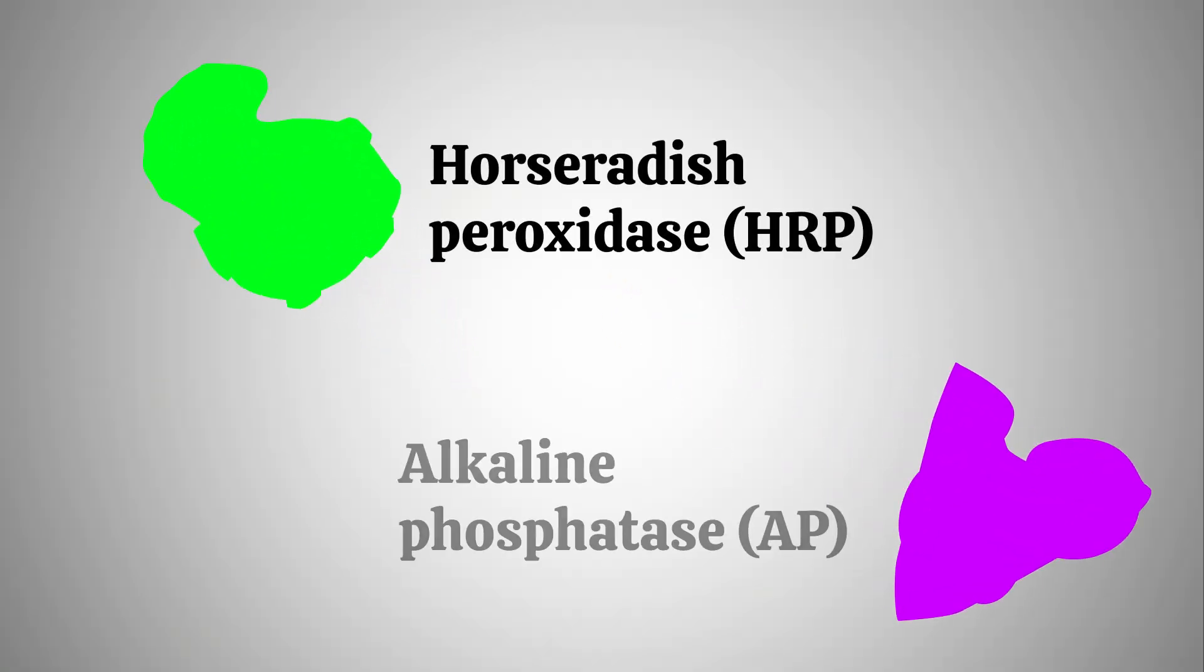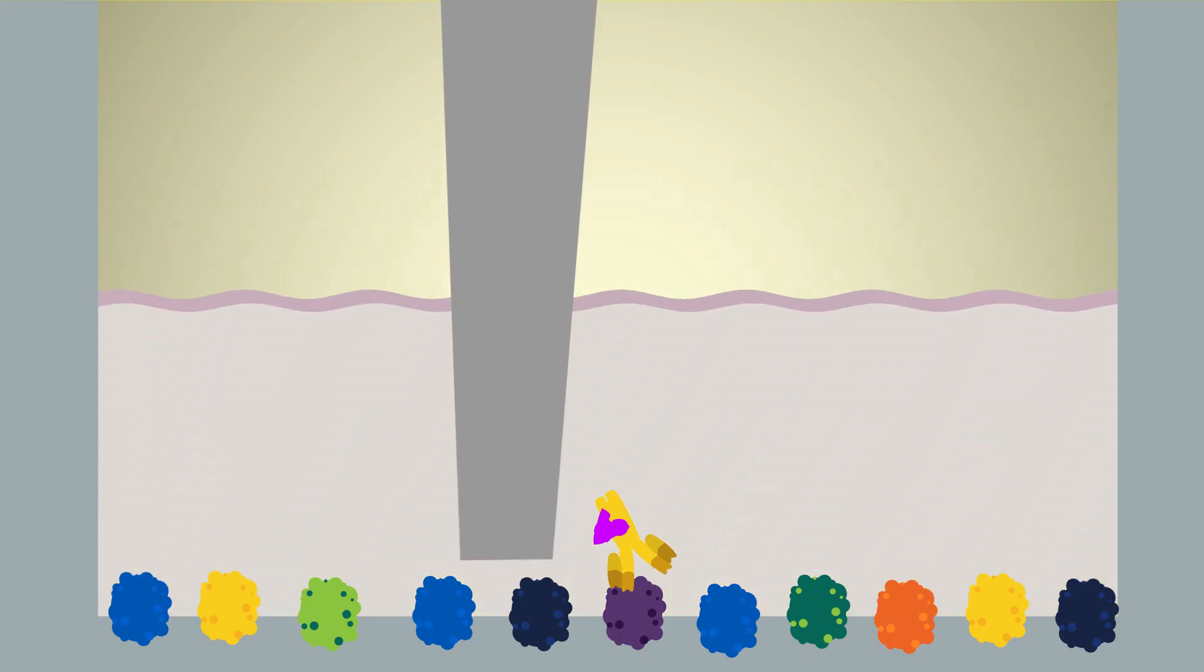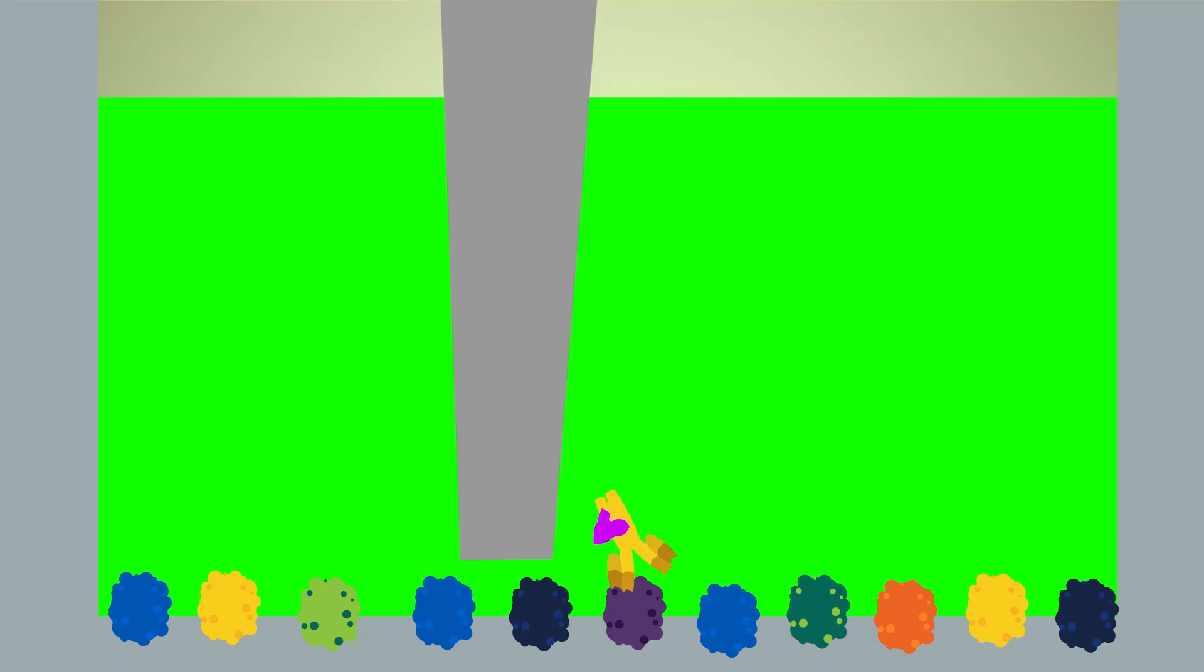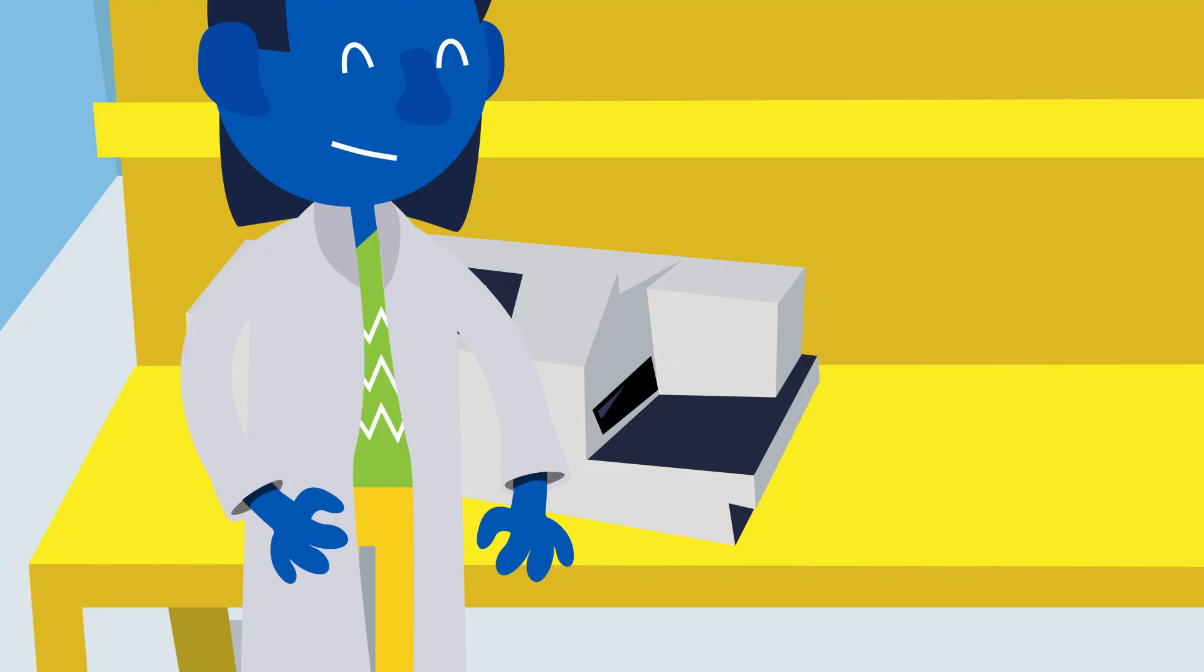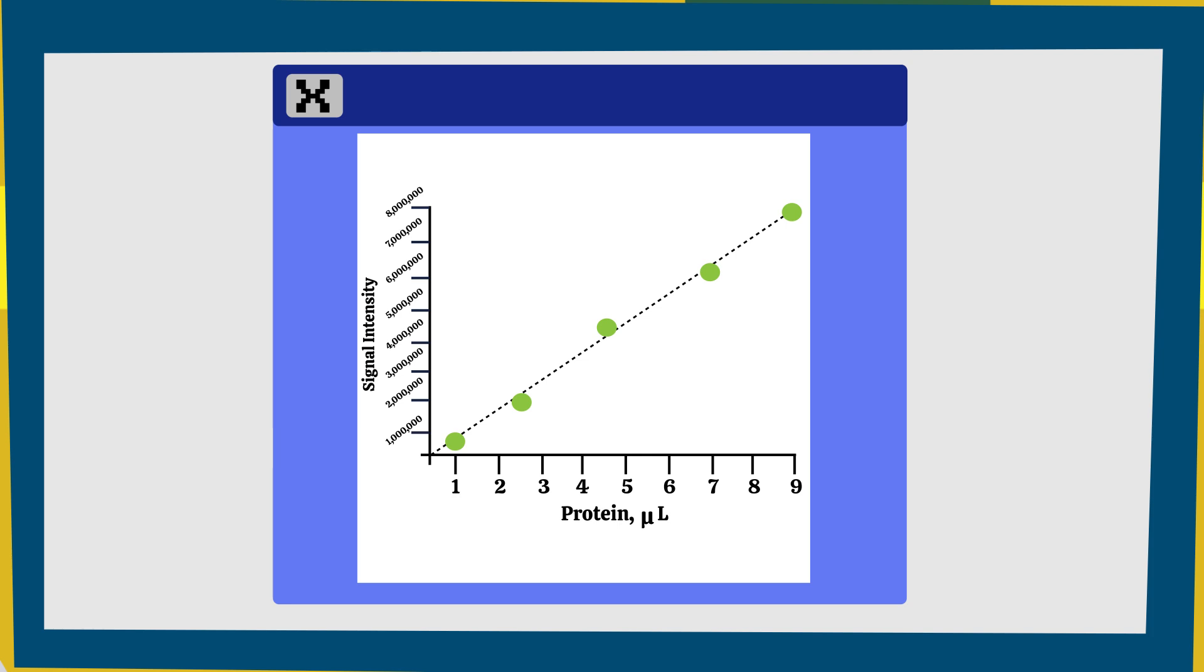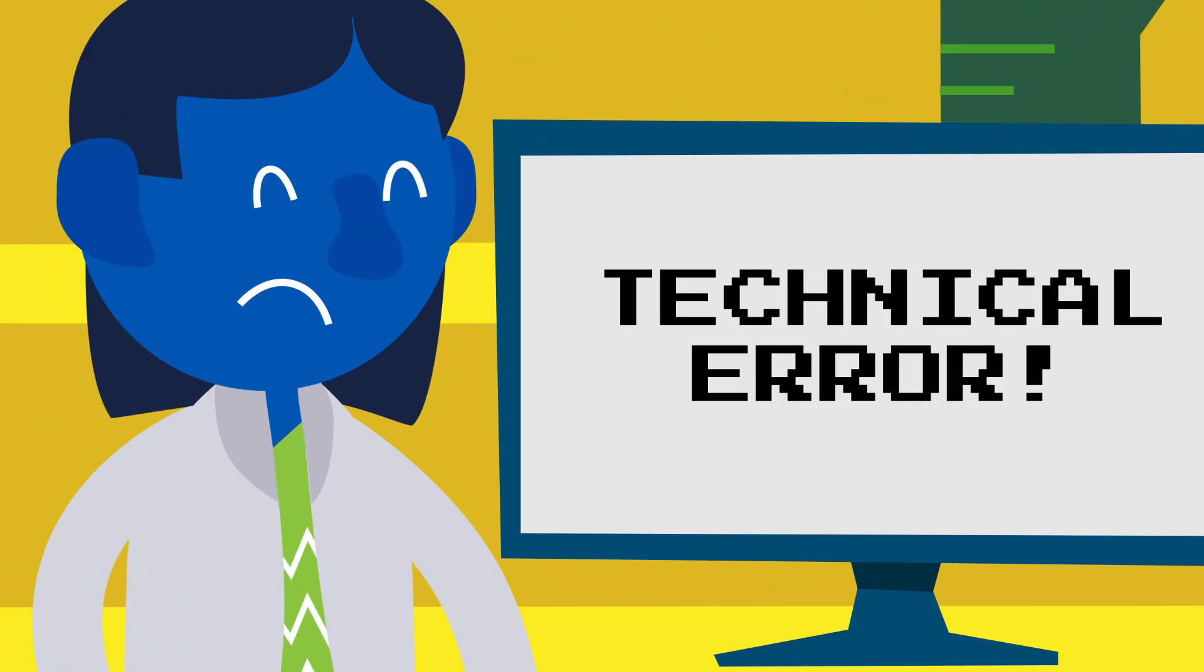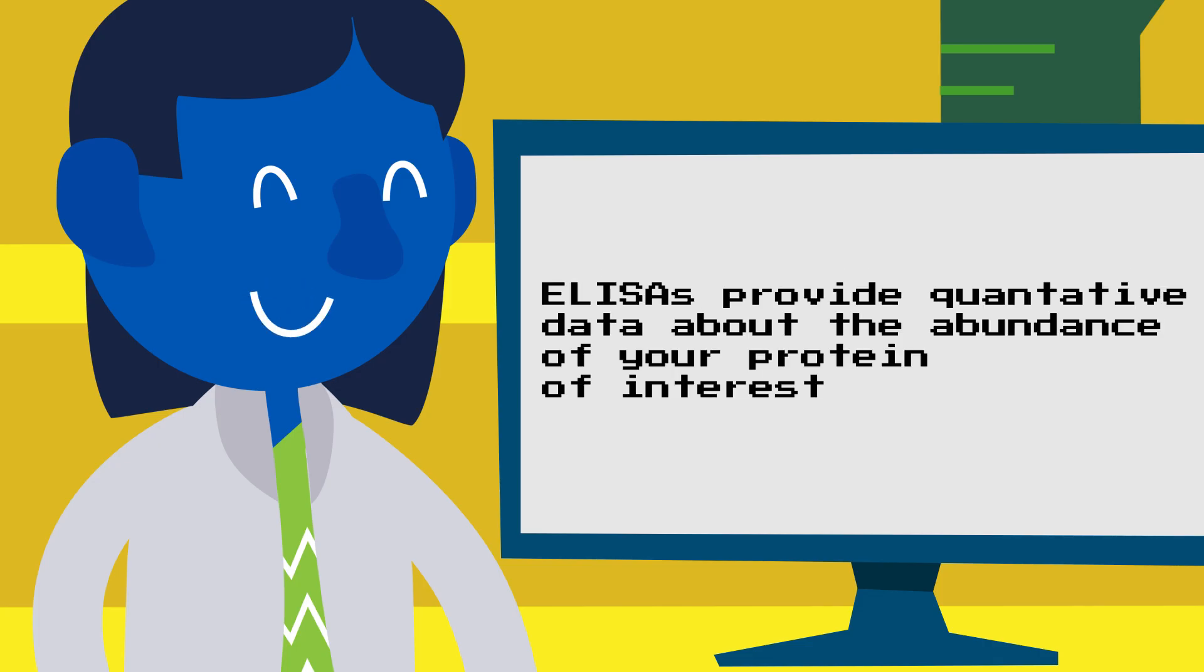or alkaline phosphatase, AP, as well as other enzymes. These enzymes can react with a substrate to produce a color change, fluorescence, or luminescence that you can measure using a microplate reader. The readout for your sample can be compared to a standard curve generated on the same plate. ELISAs are highly sensitive assays, and you'll need to be careful not to introduce contamination or technical errors when setting up your plates. They provide quantitative information on the abundance of your protein of interest.